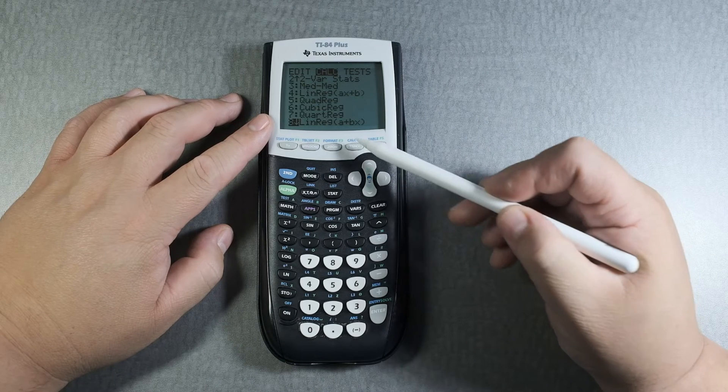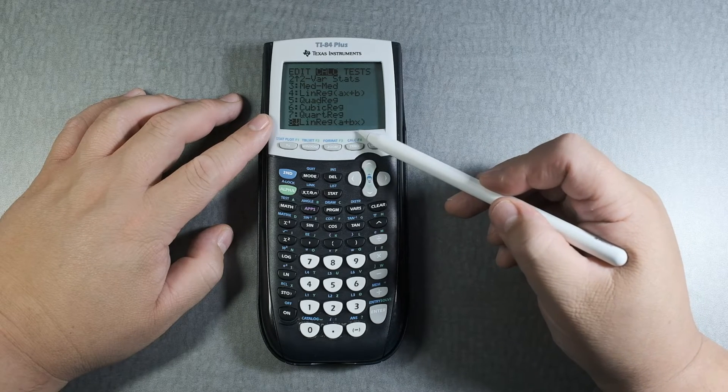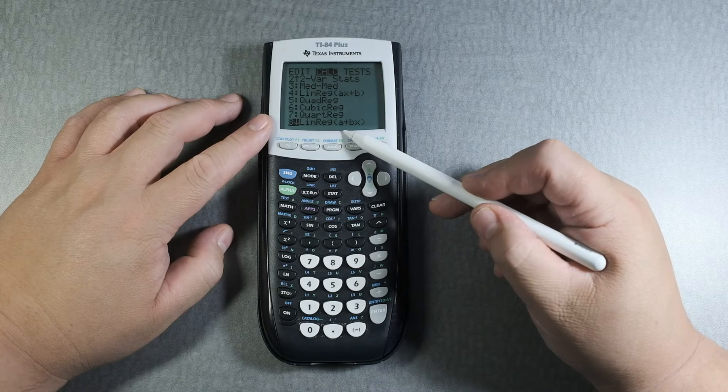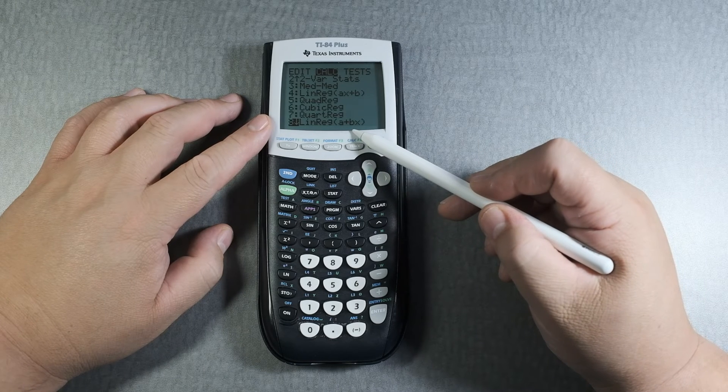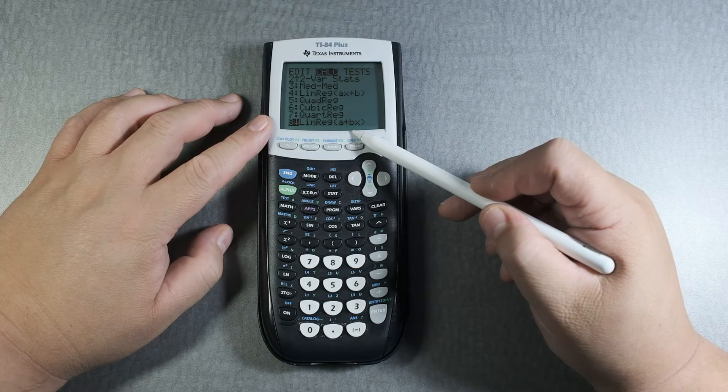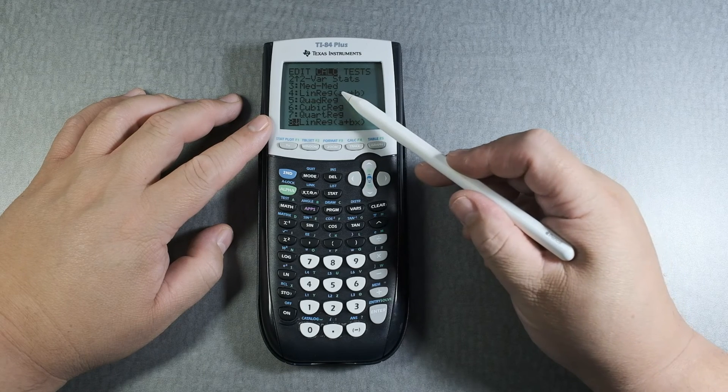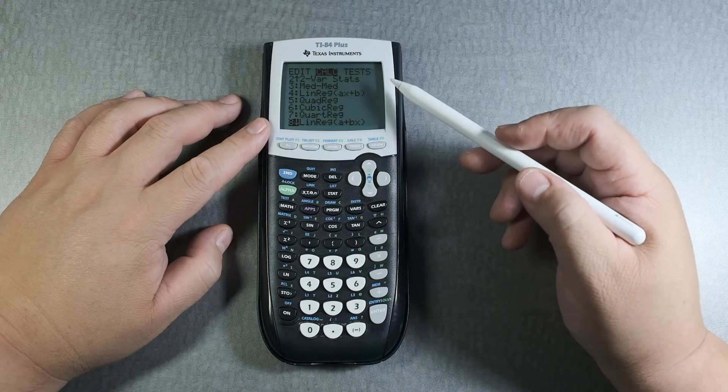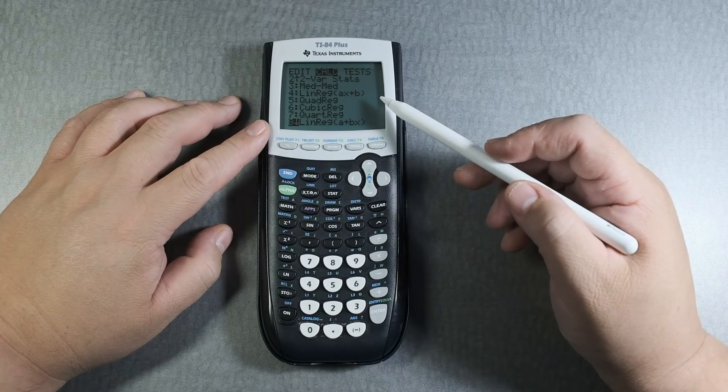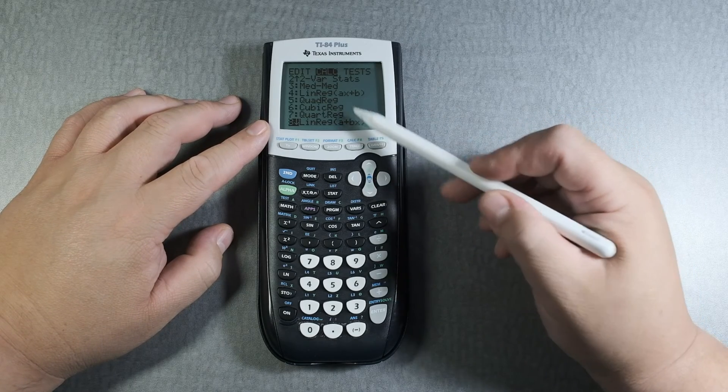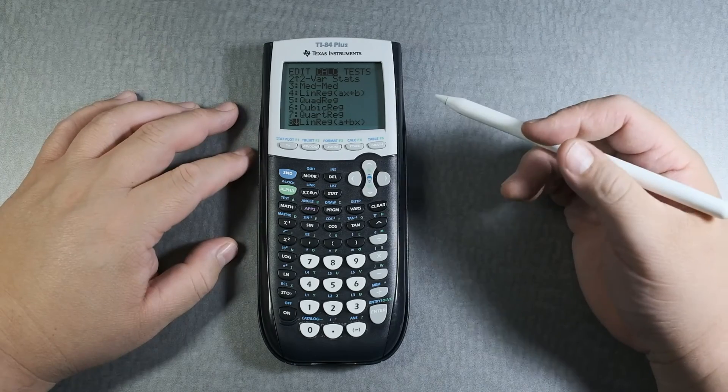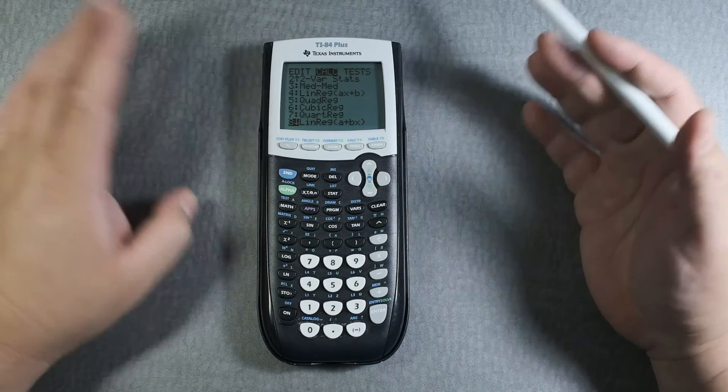Or scroll more down to a plus bx, where a is the y-intercept and b is the slope. Whatever coefficient is next to the letter X, that's how you determine the slope. It depends on your teacher.